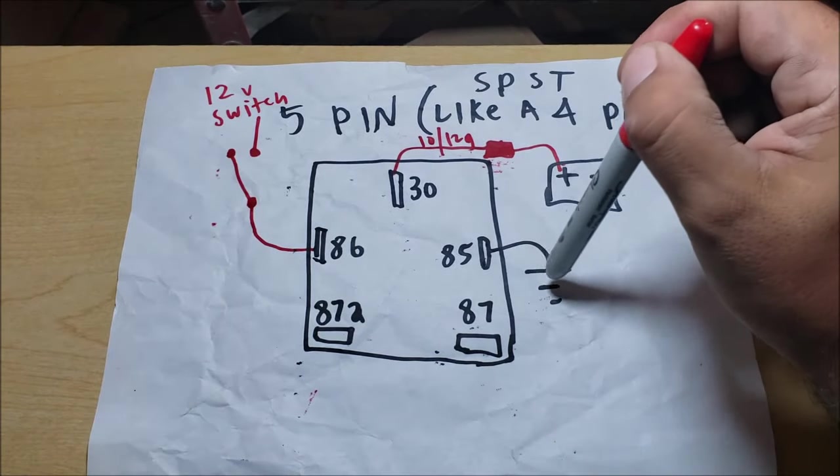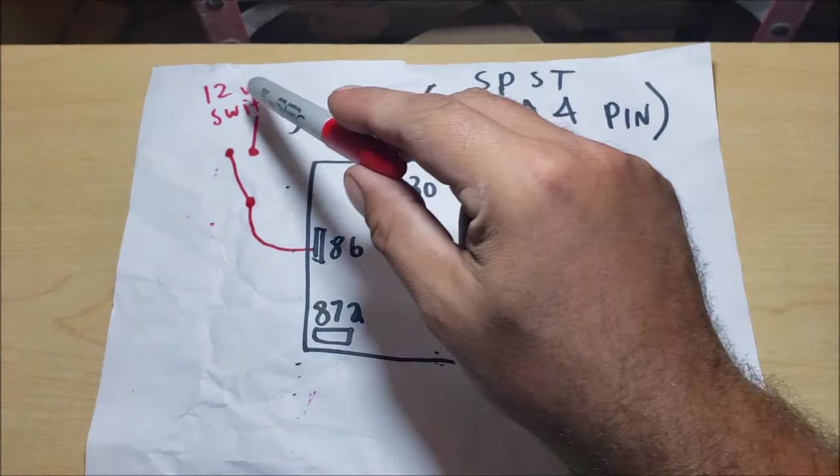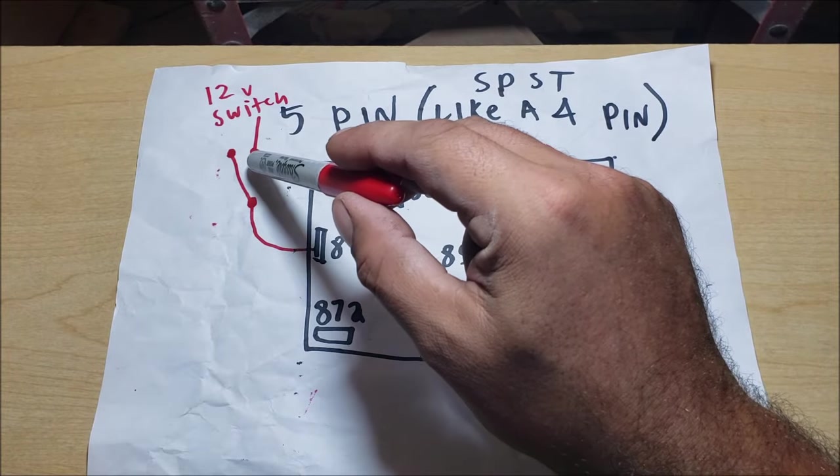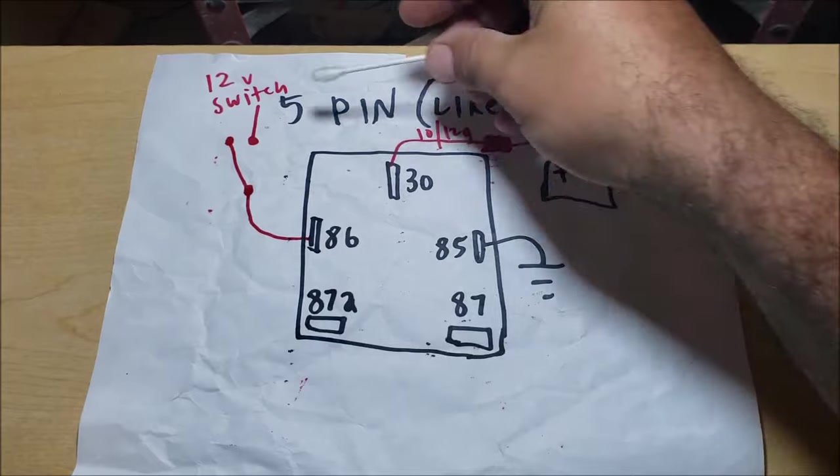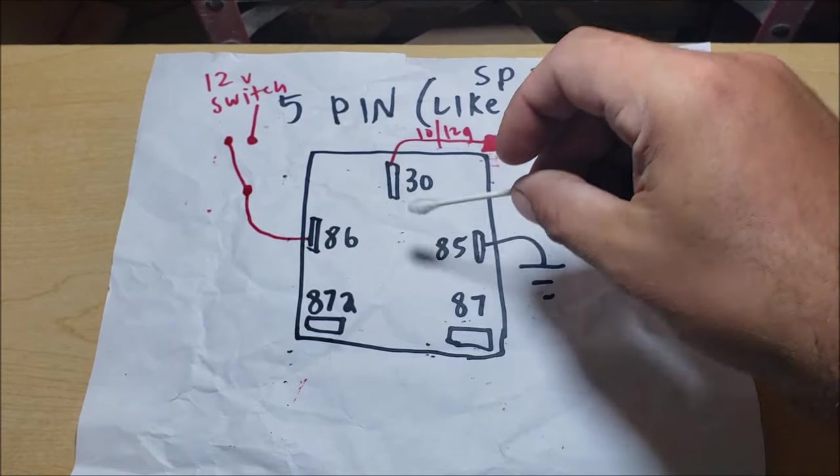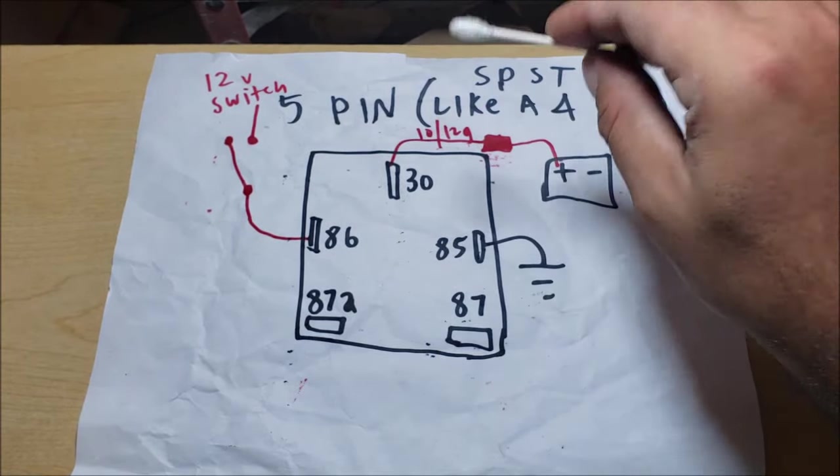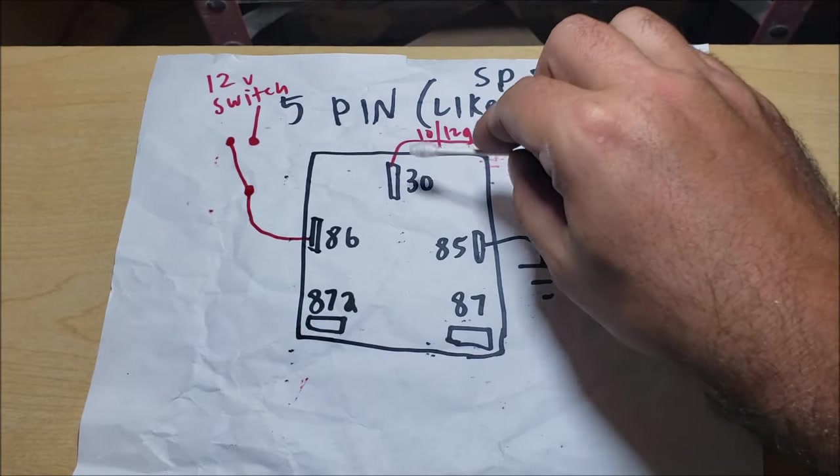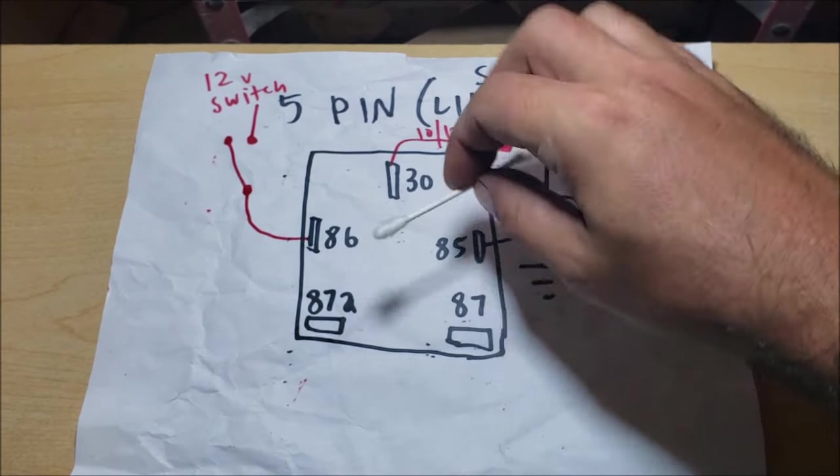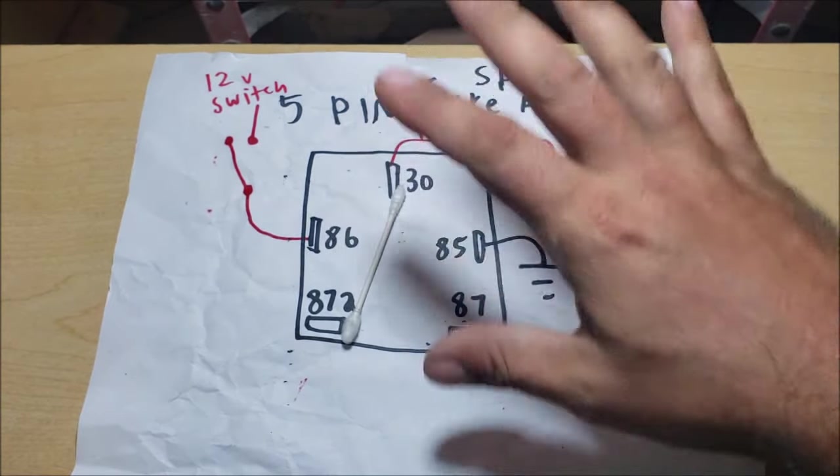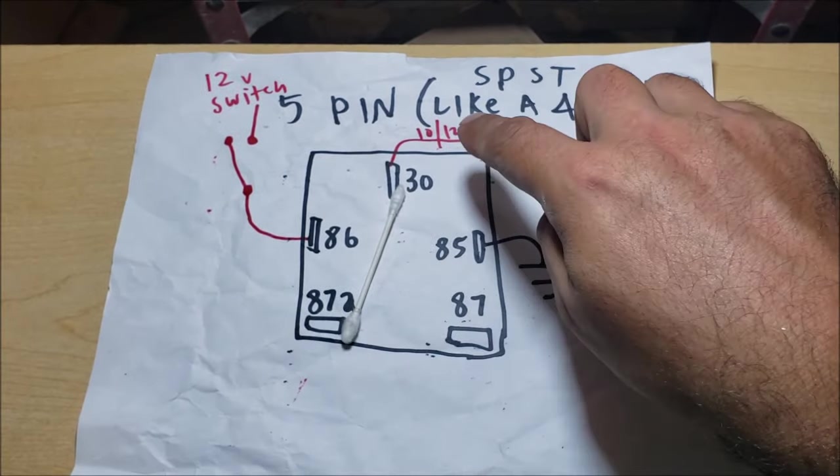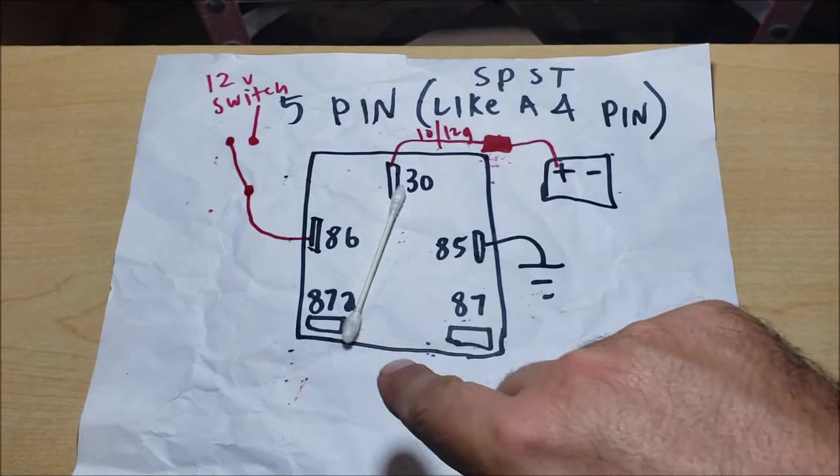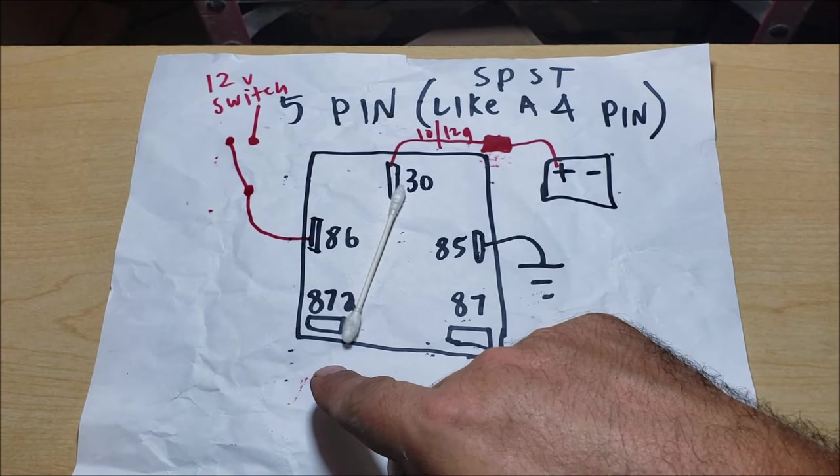Same thing like the other one, 85 is ran to ground, you got 12-volt hot through a switch however you want to run the switch to 86. So we have not energized the electromagnet, we have not turned this relay on. Power on a five pin is going from 30 straight to 87a. We haven't done anything to it, that's what it's going to do, it's going to send power right there. We got straight power to 87a, we touch it with a test light, it's going to light up.